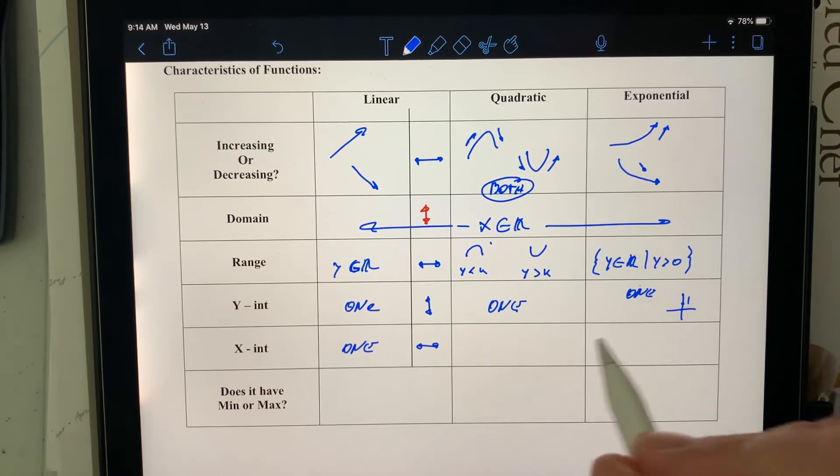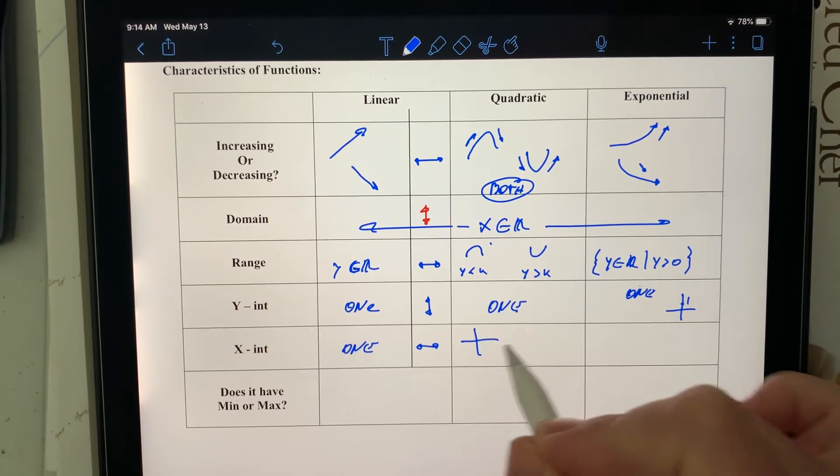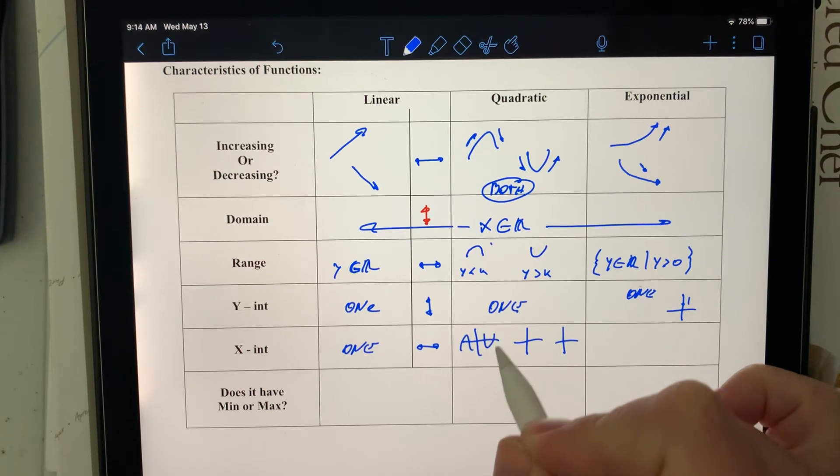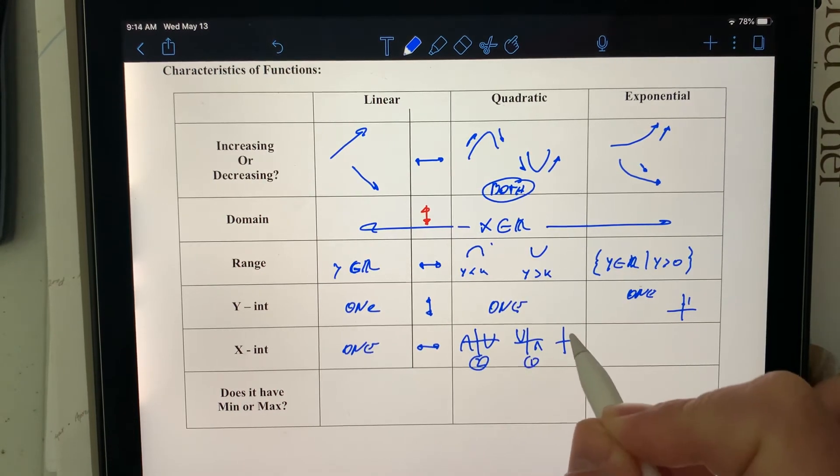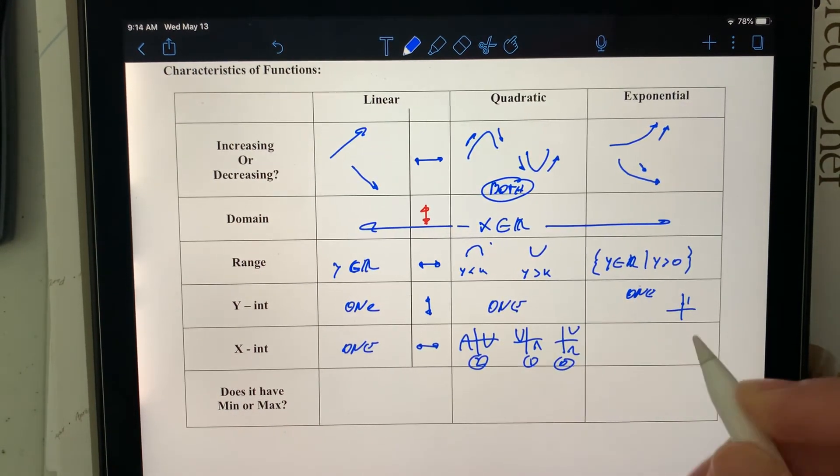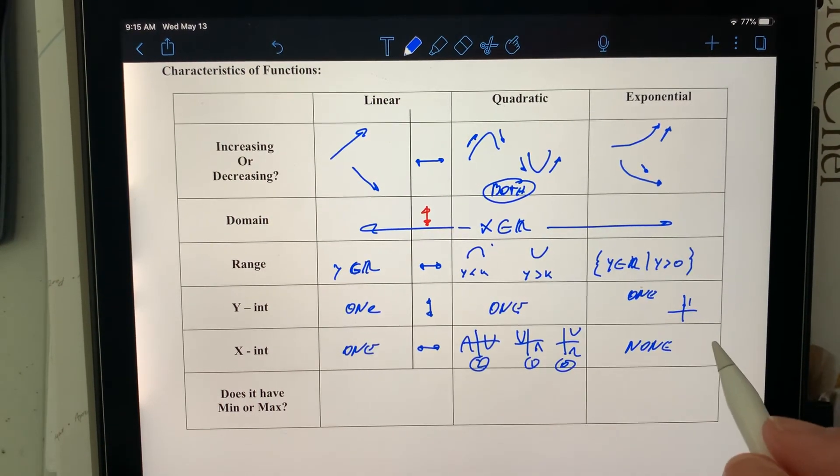But quadratic, we know we can have three different cases, and that is it can cross it two times, it can cross it just once so it just touches, or it never crosses and it has none of them. And for exponential function, at least for the basic one, it's none. It never reaches the x-axis.